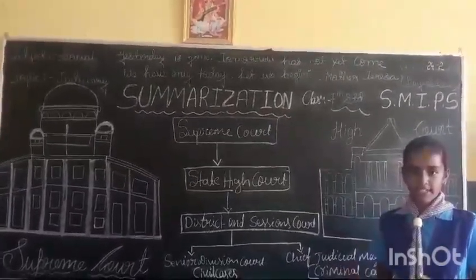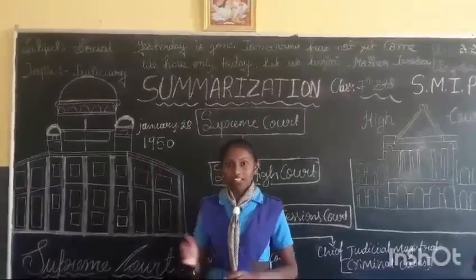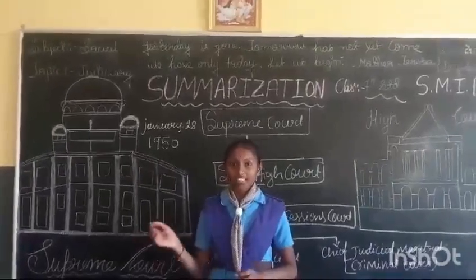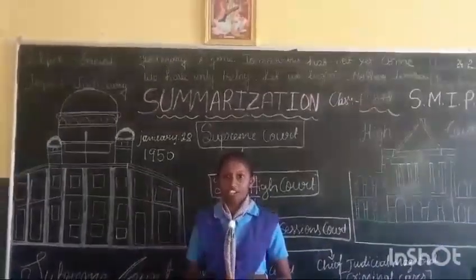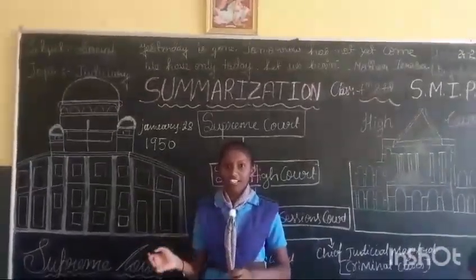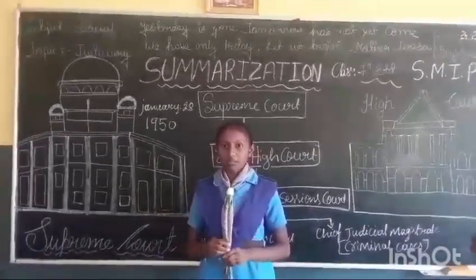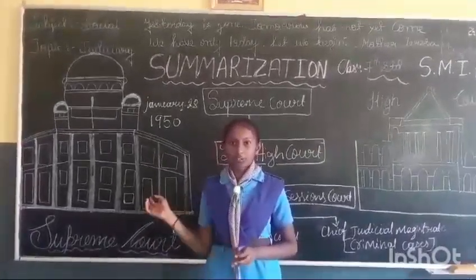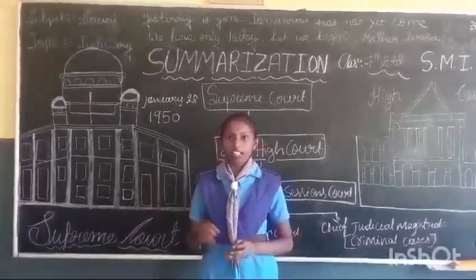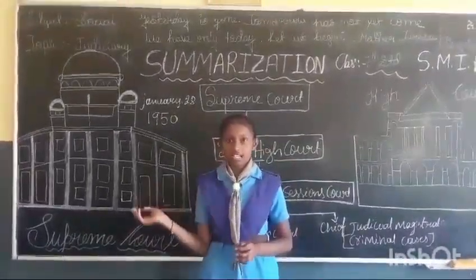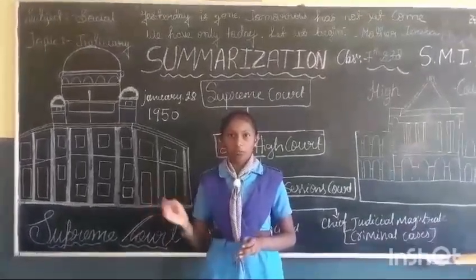Its judgment is final. The Supreme Court came into existence by an Act of Parliament on January 28, 1950. It is located in New Delhi. The President appoints the Chief Justice and the other justices of the Supreme Court.